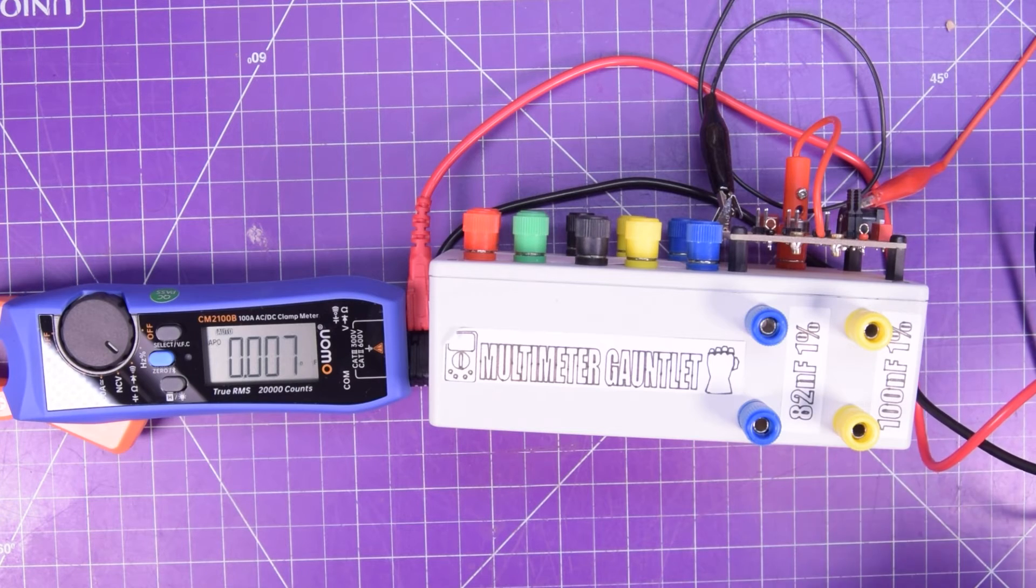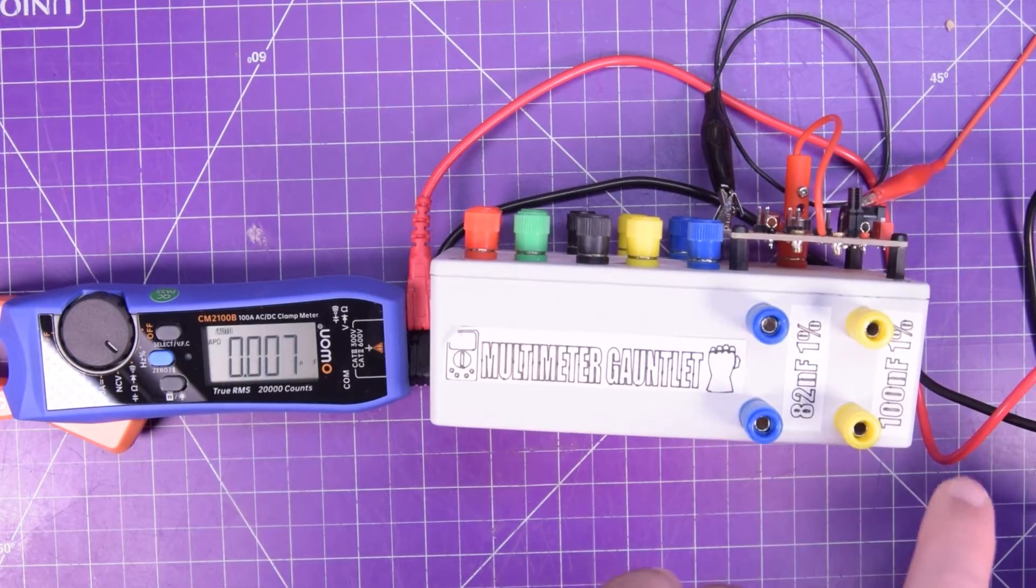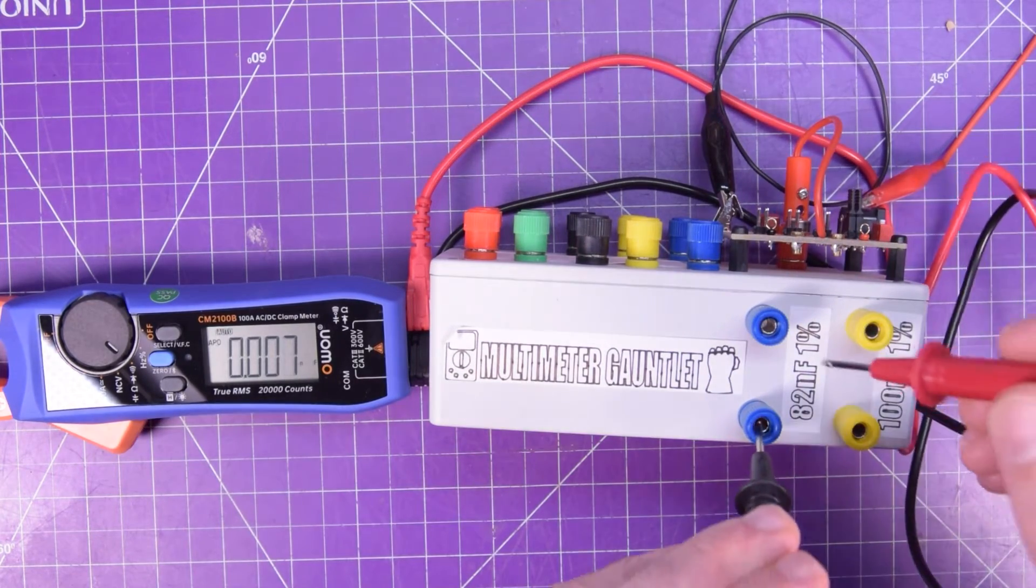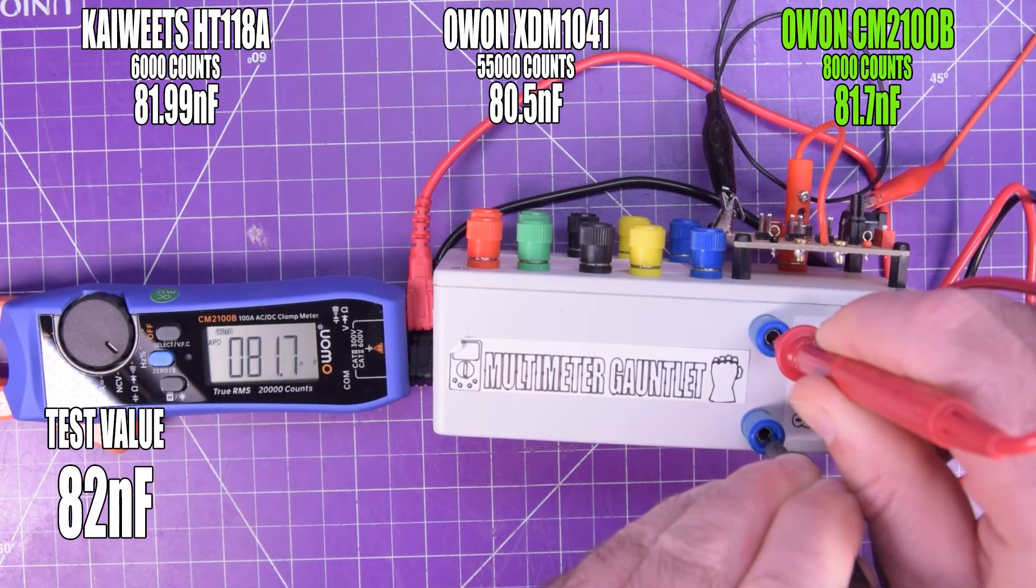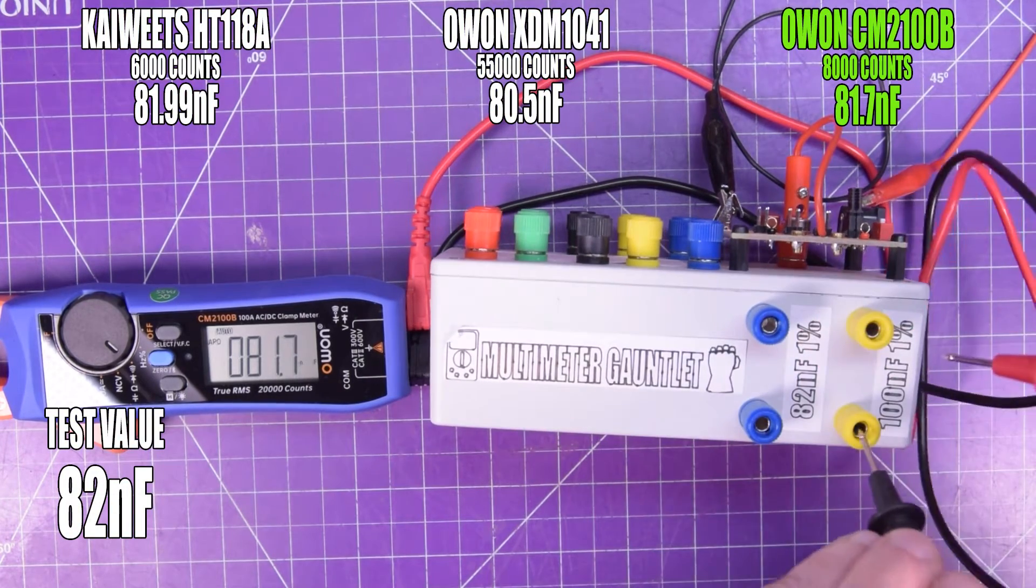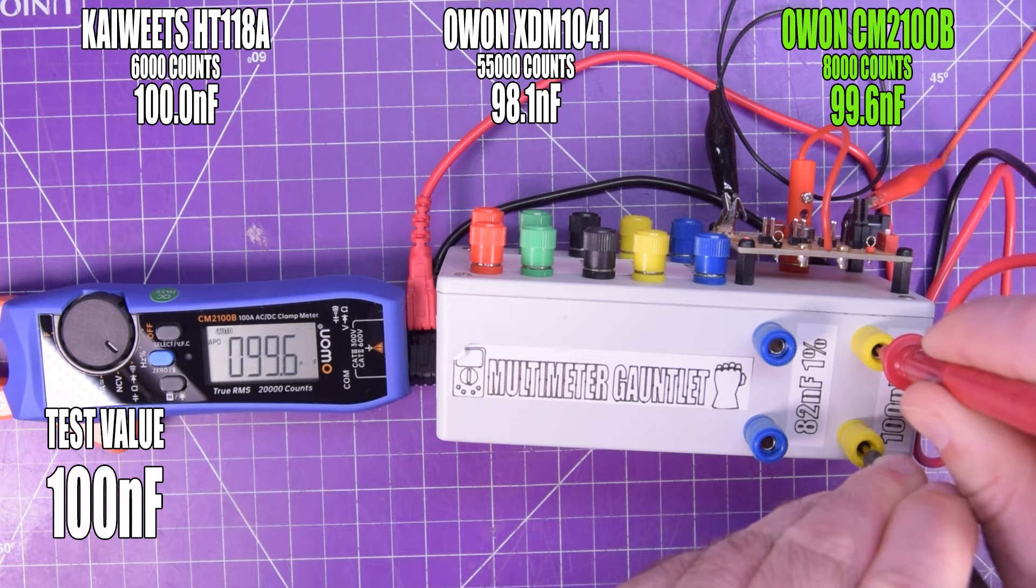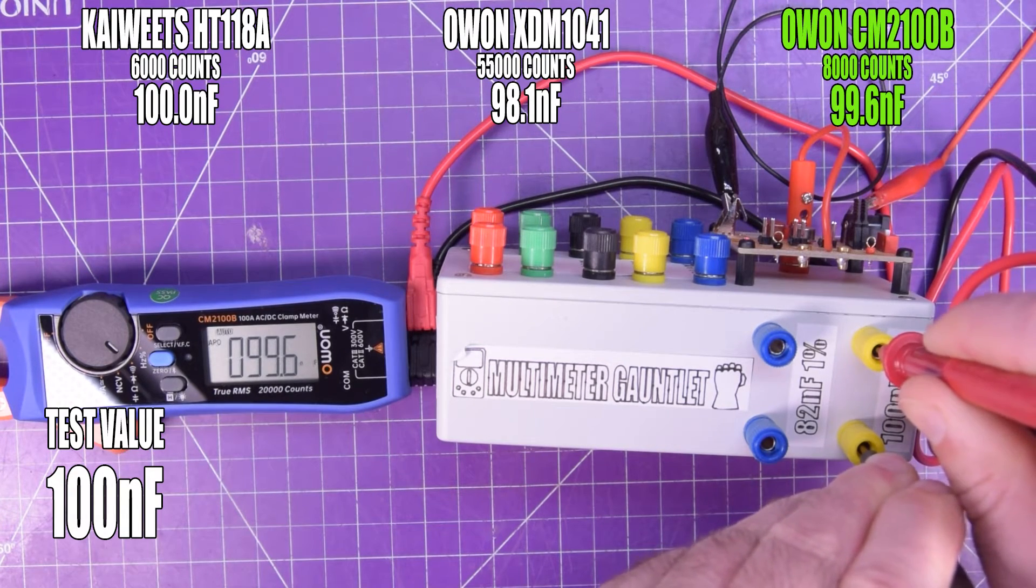And for capacitance, we've got 82 nanofarad and 100 nanofarad. Here we go. 81.7, pretty close. And 100. 99.6, again, pretty damn close.